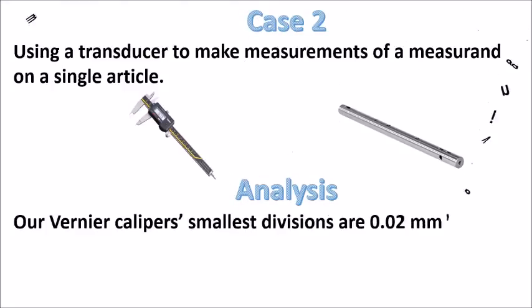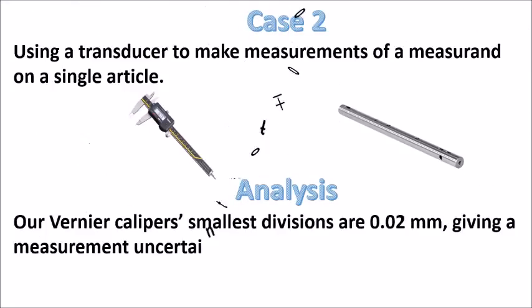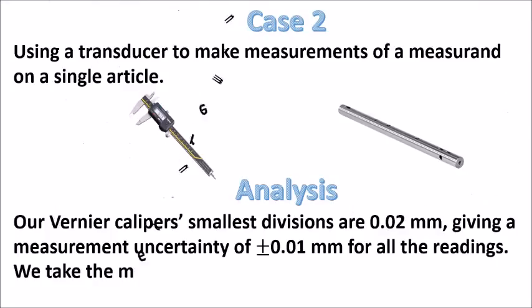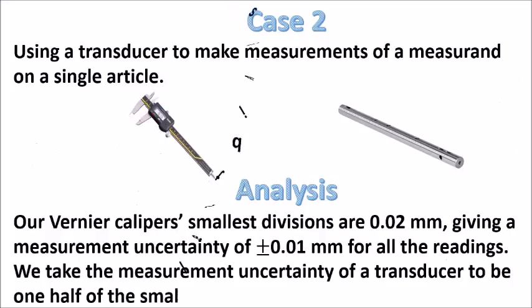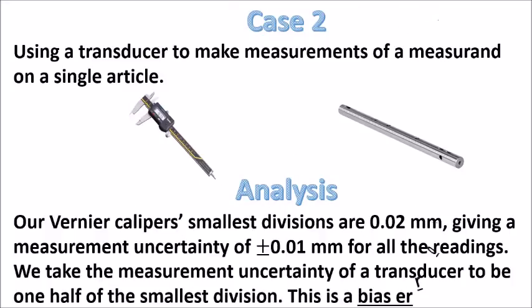Our Vernier caliper's smallest divisions are 0.02 mm, giving a measurement uncertainty of plus or minus 0.01 mm for all the readings. In general, we take the measurement uncertainty of a transducer to be one half of the smallest division. This is called the bias error.